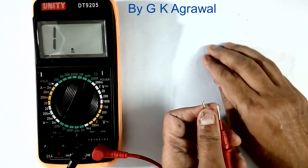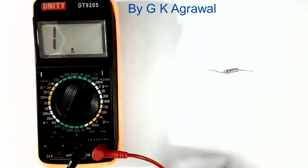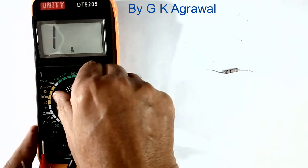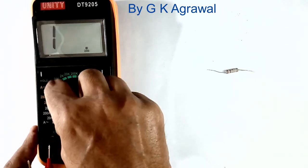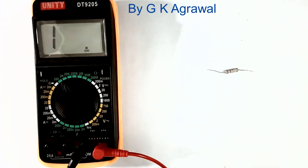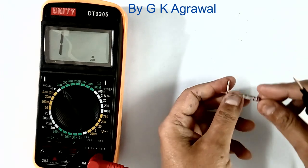Now we will see what is the problem with low value. This is 2 ohms. So I will keep scale of the multimeter at 200 ohms. That is the lowest value I have.